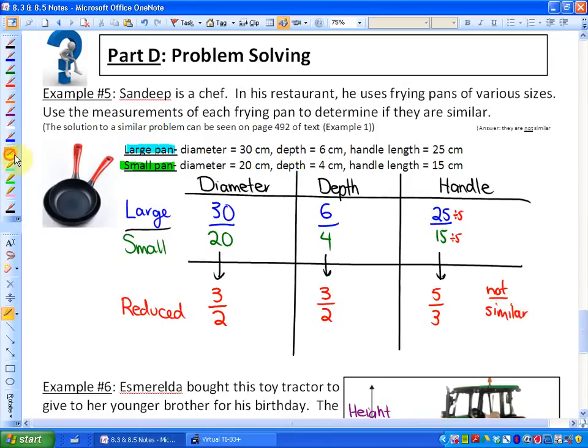A second method is to find out what the scale factor is to go from the small pan to the large pan. If I look at the diameter, 30 divided by 20 gives me a scale factor of 1.5.